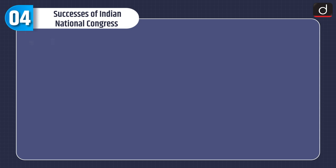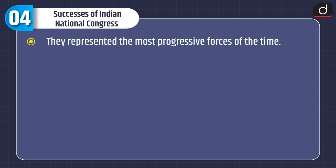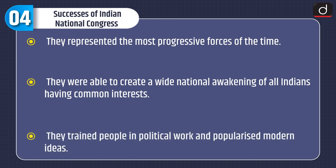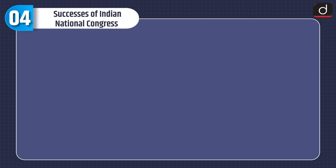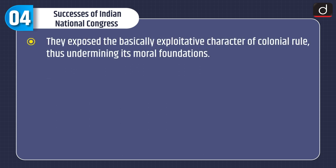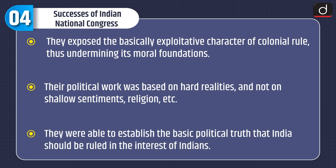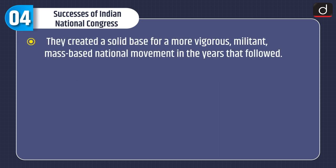Now let's discuss about successes of Indian National Congress. They represented the most progressive forces of the time. They were able to create a wide national awakening of all Indians having common interests. They trained people in political work and popularized modern ideas. They exposed the basically exploitative character of colonial rule, thus undermining its moral foundations. Their political work was based on hard realities and not on shallow sentiments, religion, etc. They were able to establish the basic political truth that India should be ruled in the interest of Indians. They created a solid base for a more vigorous, militant, mass-based national movement in the years that followed.